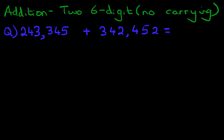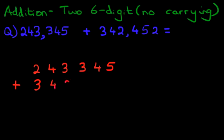Now the first stage is we're going to convert this into the vertical format. So let's do that. 243,345 plus, note how we write this down, 342,452.